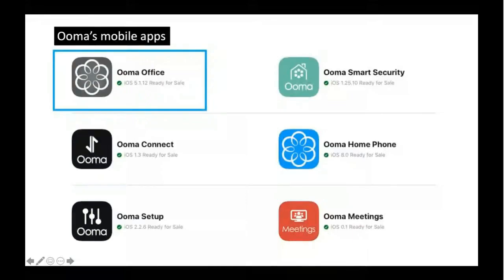UMA has a portfolio of mobile apps. Today we specifically will talk about UMA Office, which is shown in the top left corner. This is the app which is used for making phone calls, for messaging, for checking your voicemail, and certain other parameters.